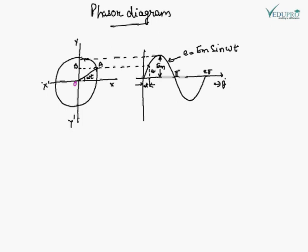In the figure, OA represents to the scale the maximum value of alternating quantity EM. EM is OA.